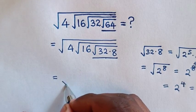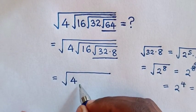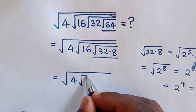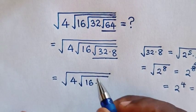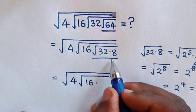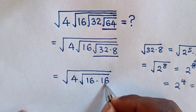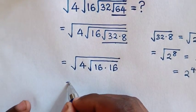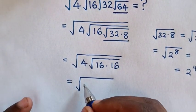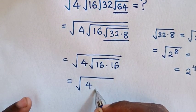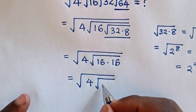Then it will be equal to square root of 4 under square root of 16, then times square root of 32 times 8, which is 16. Then it will be equal to square root of 4 under square root of 16 times 16.